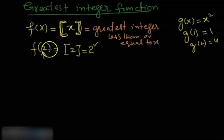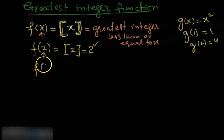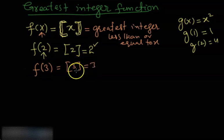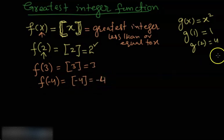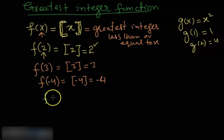Whenever you insert an integer to this function it will give you that integer back. For example, if you put in 3 it gives you 3, and if you put in minus 4 it gives you minus 4. The interesting part is when we insert a decimal value rather than an integer. For example, what do we mean by f(0.3)?